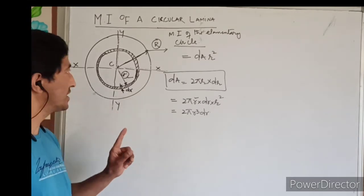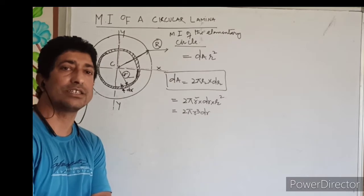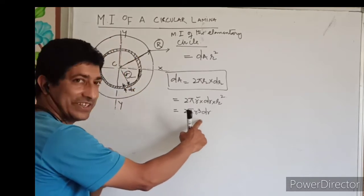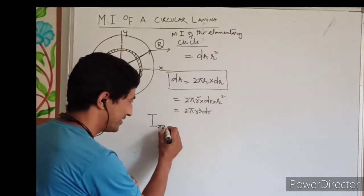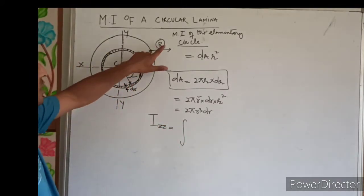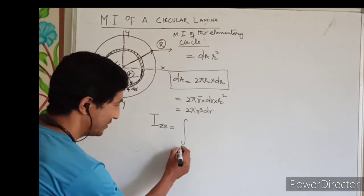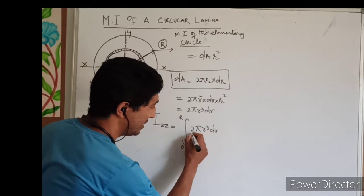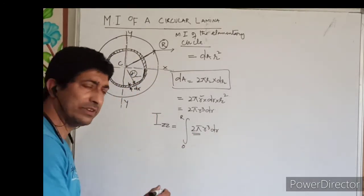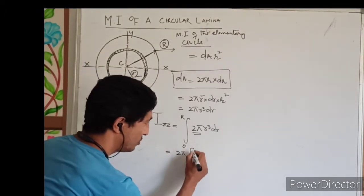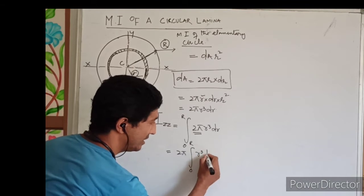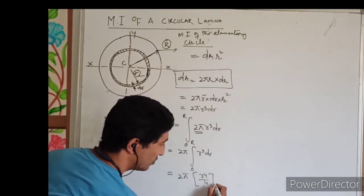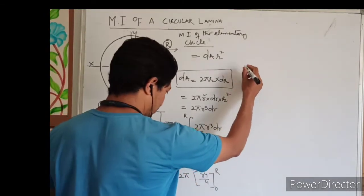Now we find the moment of inertia of the bigger circle by integrating this expression about the z-z axis, with limits from 0 to R. Taking 2π as a common term outside the integral, we get Izz = 2π · ∫₀ᴿ r³ dr. Applying the limits gives Izz = 2π · [r⁴/4] from 0 to R.